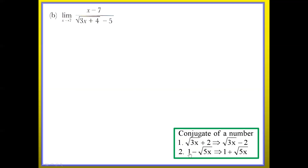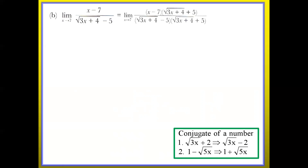If you have a number minus a function with a square root, what will happen is that number transforms — for example 1 minus square root 5x becomes 1 plus square root 5x — notice the change of sign. So can you guess what is the conjugate for square root of 3x plus 4 minus 5? Yes, you are right: you get square root of 3x plus 4 plus 5. The change of symbol is always in the center.